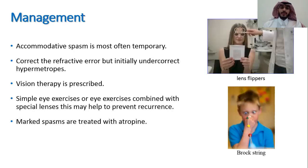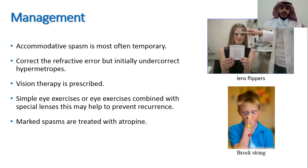Since accommodation spasm is mostly temporary, we need to correct the refractive error and we can prescribe vision therapy. Combining eye exercises with glasses will help to prevent recurrence. If there is a markedly severe spasm, we could use atropine.